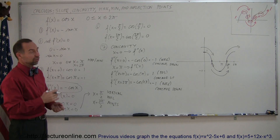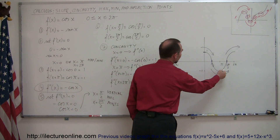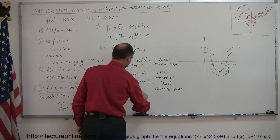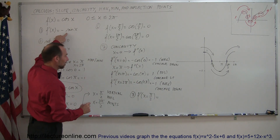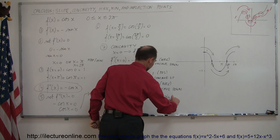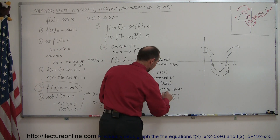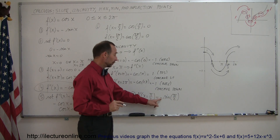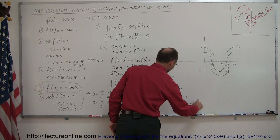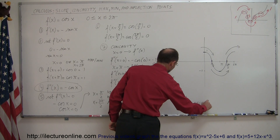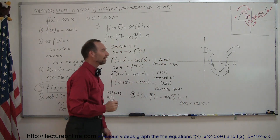For step 8, we evaluate the slope at a specific location, like at x equals π/2. f prime of π/2 equals negative sine of π/2. The sine of π/2 is 1, so with the negative in front, that's negative 1 — the slope is negative. At x equals π/2 on the graph, sure enough the slope looks negative, and that validates our work.